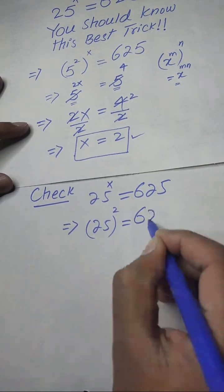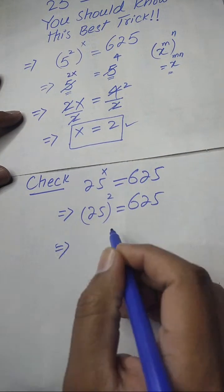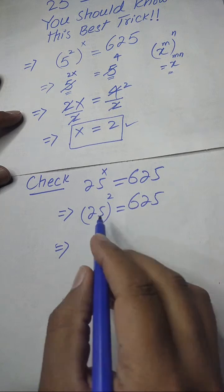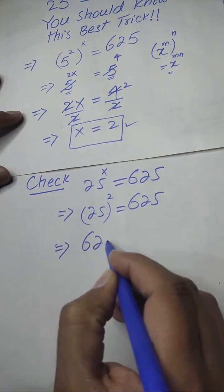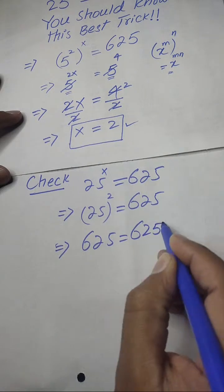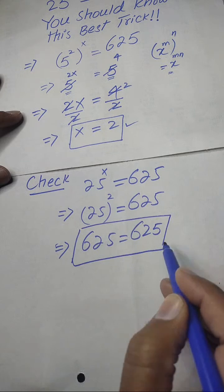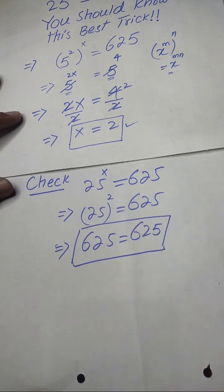After that, we know that 25 squared will become 625. So we can easily check that both sides are equal when we substitute x equal to 2. So we can say that x equals 2 is the solution of the given exponential equation.